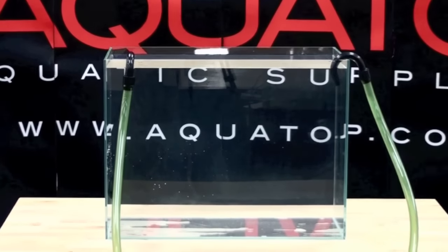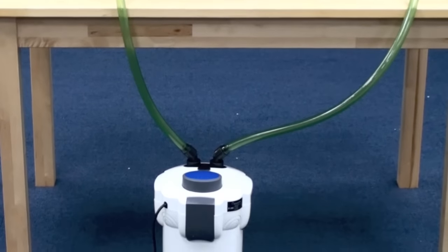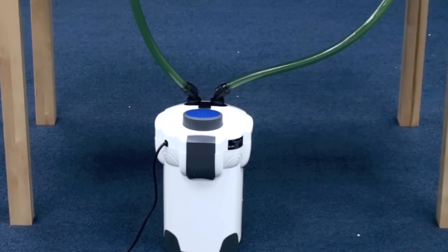First, you want to make sure that your canister filter is positioned below your aquarium. This allows the pump to work more efficiently because it has help from gravity.